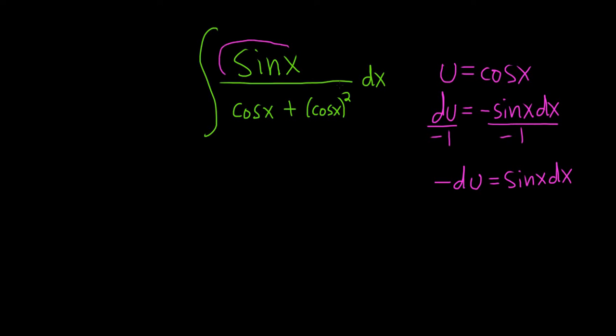Okay, so now we just replace sine x dx with negative du and u with cosine. So this is going to become, I'll leave the negative in, so negative du over, and then it'll be u plus u squared.